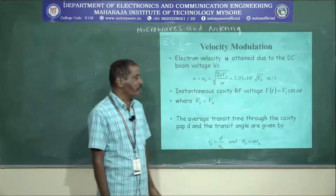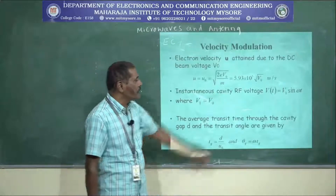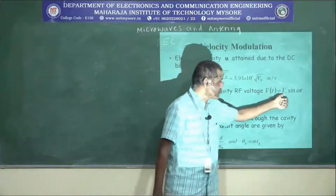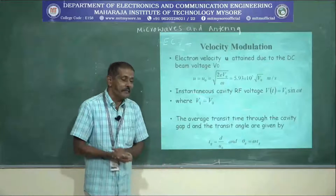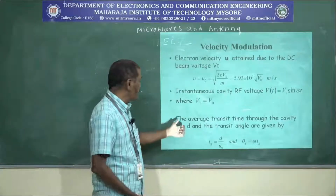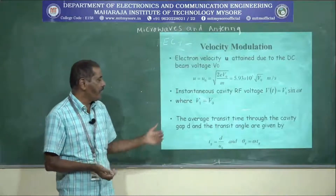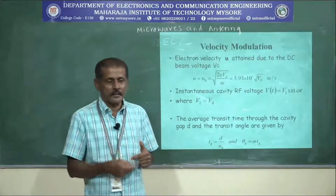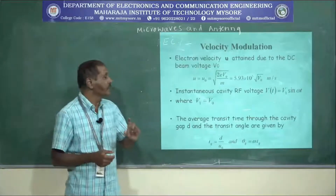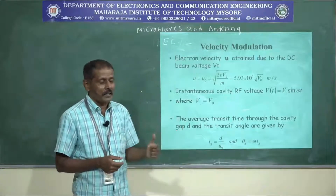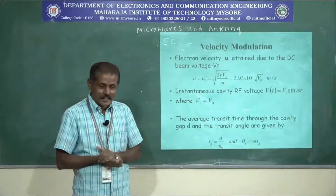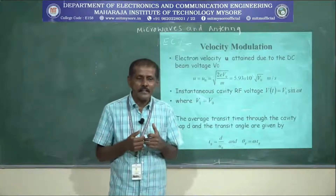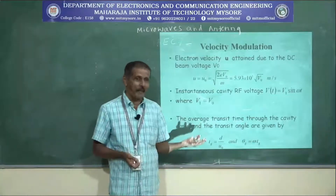The instantaneous cavity RF voltage at any instant of time V(t) equals V1 × sin(ωt). The other parameters to calculate are the average transit time through the cavity gap d and the transit angles. Depending upon whether a positive, negative, or neutral potential is present, the time taken by electrons to move through the cavity grid changes — more time for negative potential, less for positive, and nothing for neutral. The average transit time is d/U0 and the transit angle is ω × Tg, where d is the distance between cavity grids.